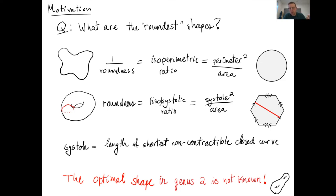One classical example is the isoperimetric problem, which asks which planar figure of a given perimeter has the largest possible area — the answer is a round disk. Another way to formulate the problem is to consider the isoperimetric ratio, which is the perimeter squared divided by the area. The initial problem is equivalent to minimizing this quantity, which makes the shape as round as possible.